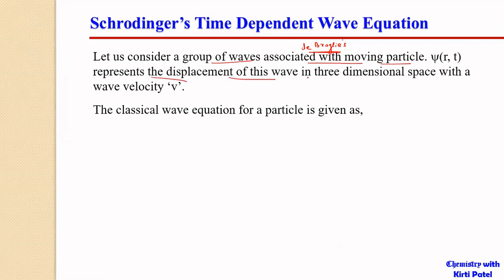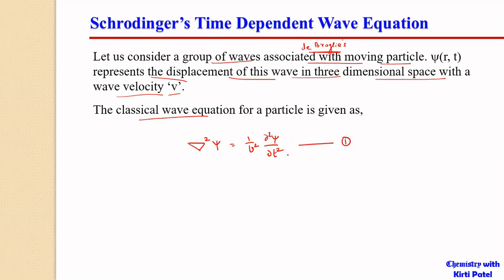ψ(r,t) represents the displacement of this wave in three-dimensional space with a velocity v. The classical wave equation for a particle is given as: ∇²ψ = (1/v²)(∂²ψ/∂t²). Here, (∂²/∂x² + ∂²/∂y² + ∂²/∂z²) is called the Laplacian operator. Let this be equation number 1.